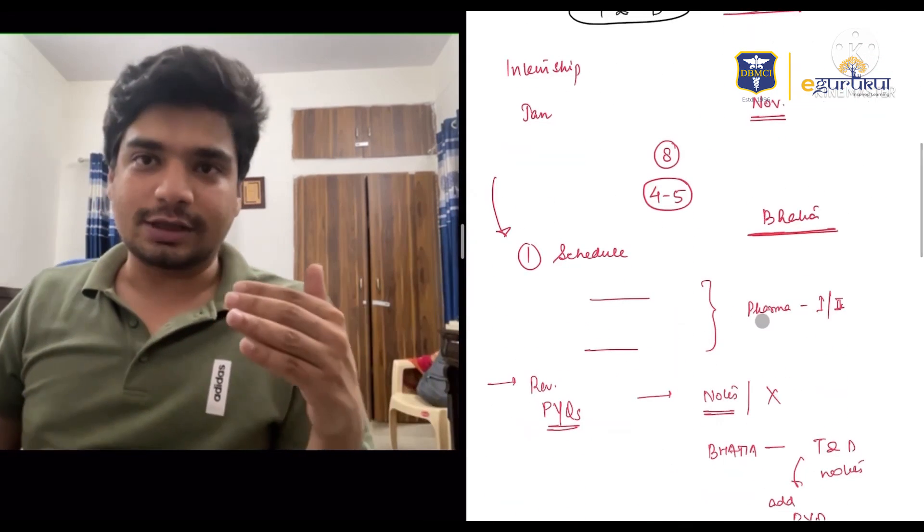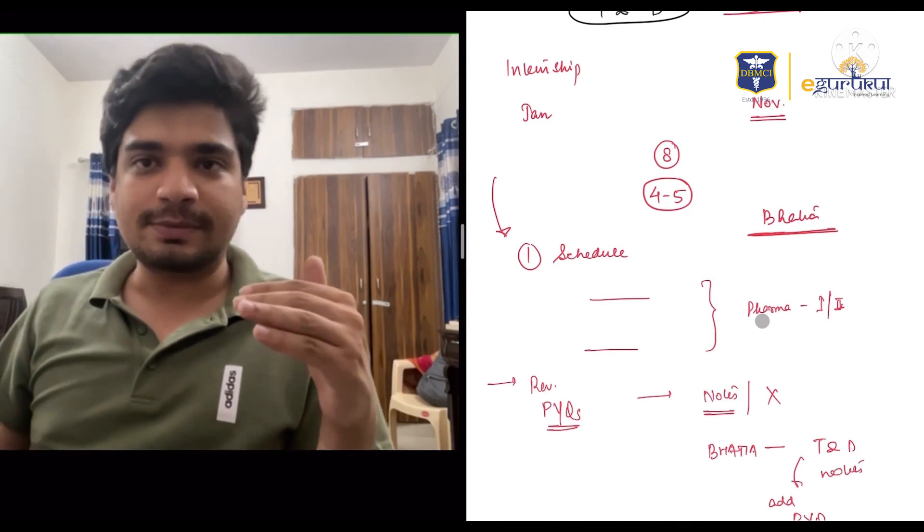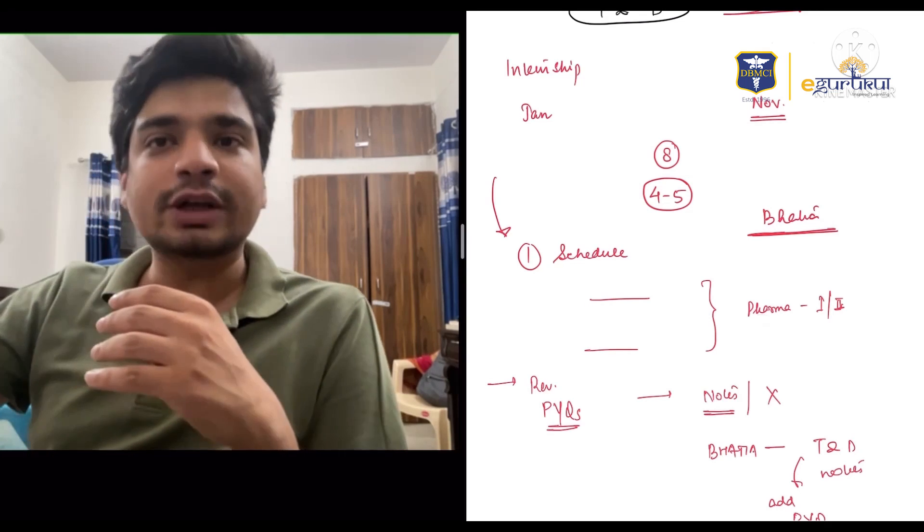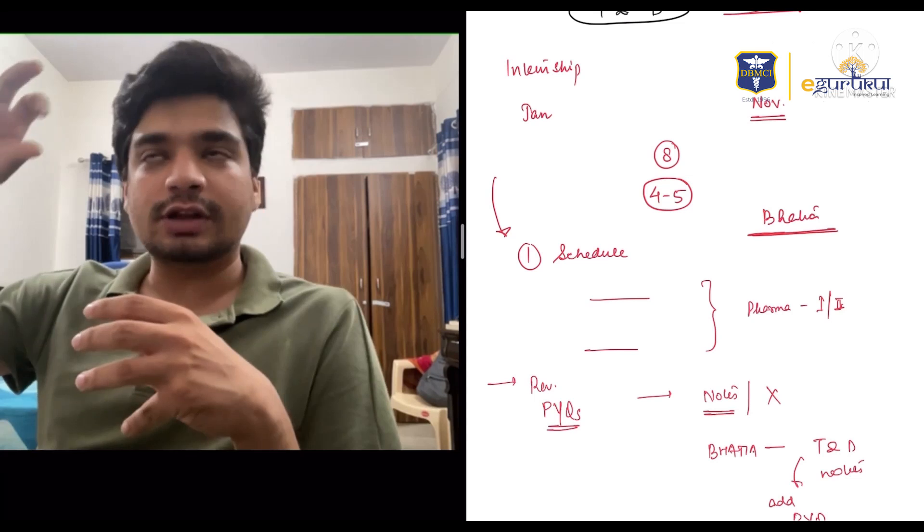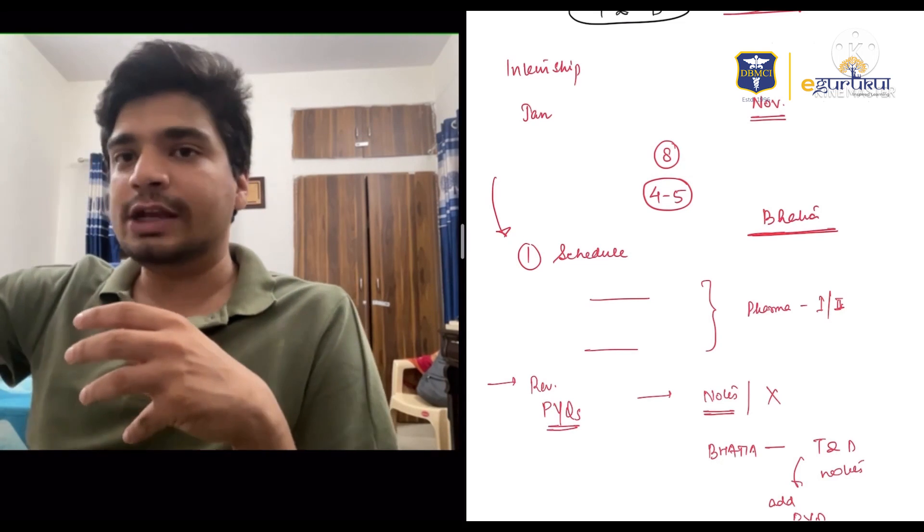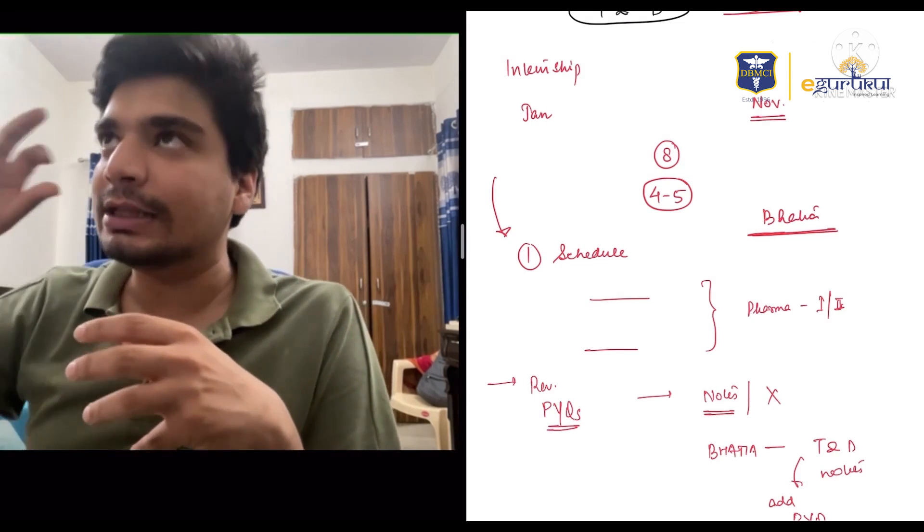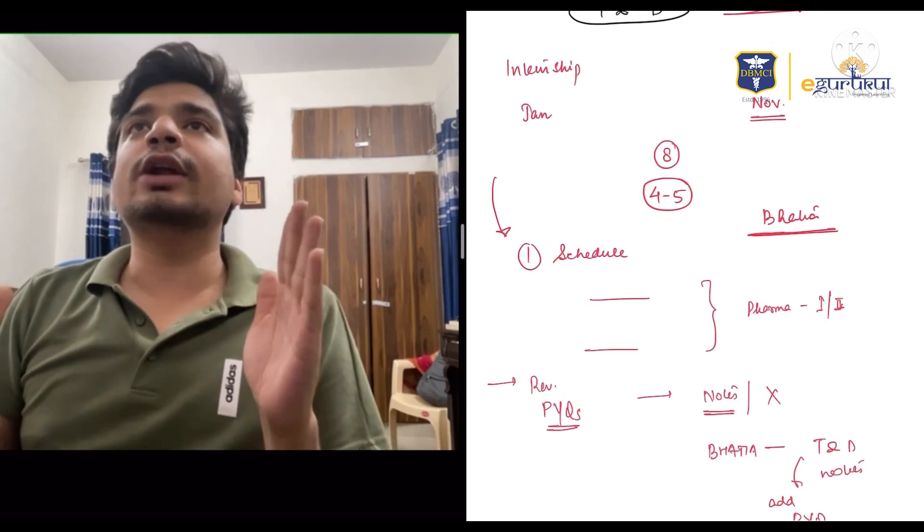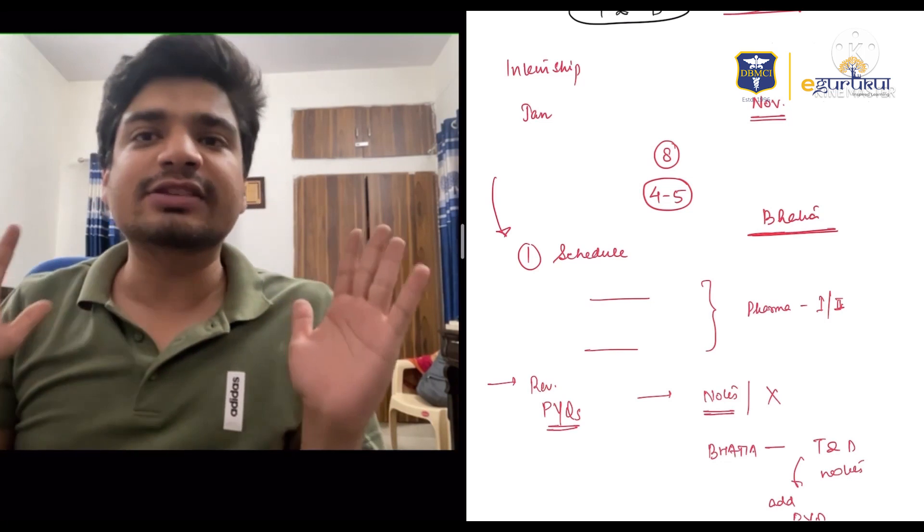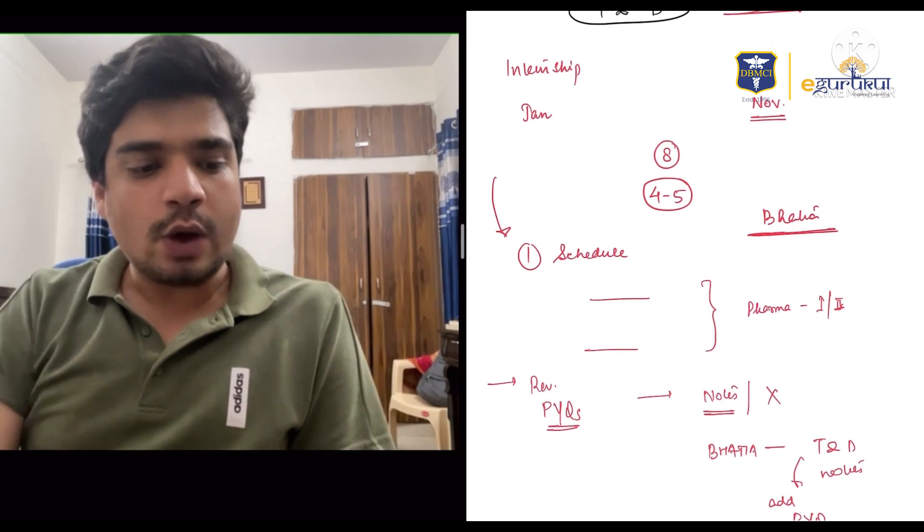The first two or three months, Bhatia gave us a schedule. First they'll do pharma in two weeks, then psychiatry, then microbiology. I remember this. I got an idea that in one month I have to complete these three subjects. I now had a schedule.